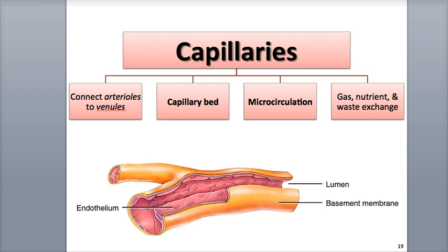The microscopic thin-walled capillaries are the smallest blood vessels, numbering around 20 billion, and form elaborate interwoven networks of vessels among the body's tissues and cells. They branch extensively and have a vast amount of surface area, which enhances their functions of gas, nutrient, and waste exchange between the blood and the interstitial fluid. The capillaries are also known as exchange vessels due to this primary function.